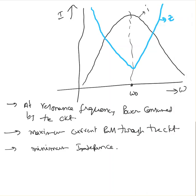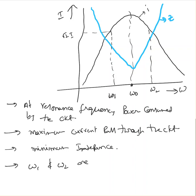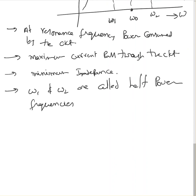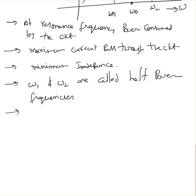Now I'm going to define two more terms called half power frequencies. Half power frequencies are the frequencies at which the power consumed by the circuit is half of the maximum value. At these frequencies the current is 0.707 times the maximum current — that is, the maximum divided by square root of 2. Omega 1 and omega 2 are called the half power frequencies. At omega 1 and omega 2, the power consumed by the circuit is half of the maximum value.